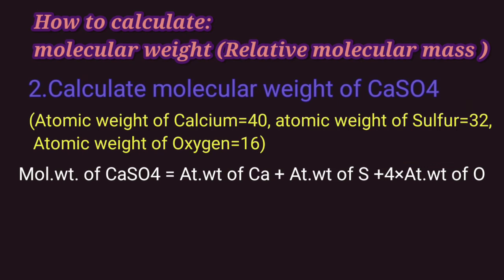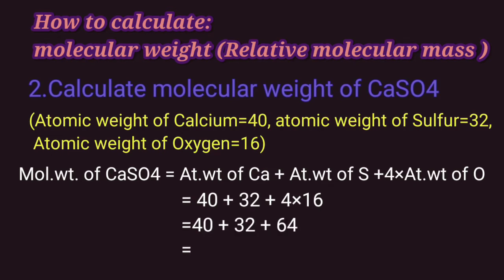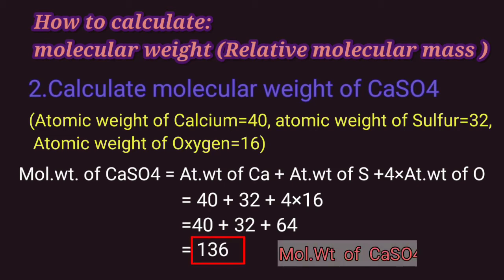We will substitute the atomic weights: we have 40 plus 32 plus 4 into 16. So 40 plus 32 plus 64 will give us 136. So molecular weight of calcium sulfate is 136.